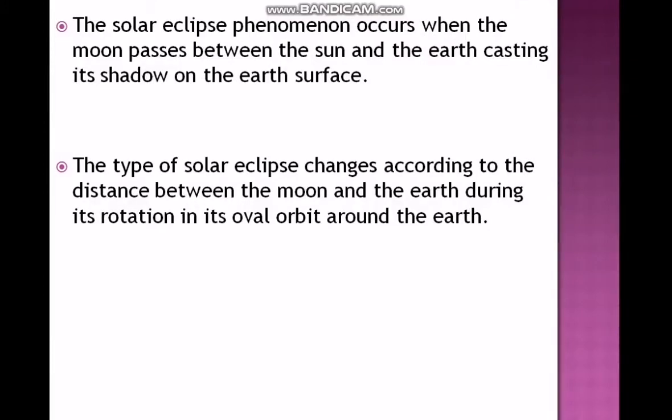The solar eclipse phenomenon occurs when the moon passes between the Sun and the Earth, casting its shadow on the Earth's surface. The type of solar eclipse changes according to the distance between the moon and the Earth during its rotation in its oval orbit around the Earth.